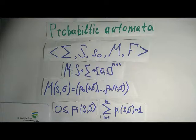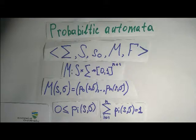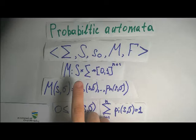Now let's consider probabilistic automata. It is an extension of FSA. So it is a set of Sigma, S, S0, M, and F. Sigma, S, S0, and F are the same, but M is defined differently.